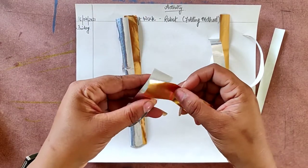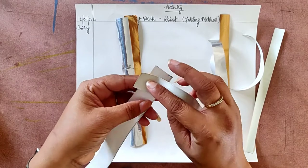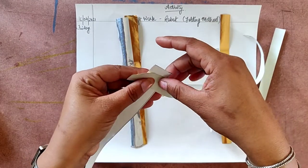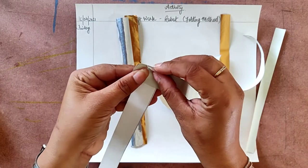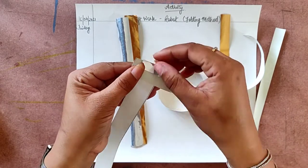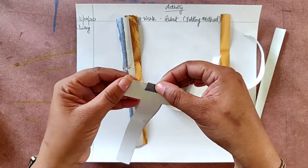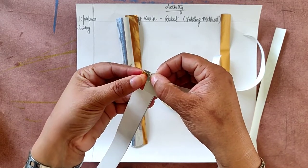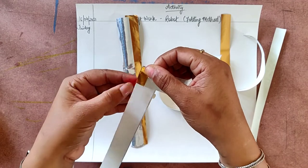Take one sheet like this, another sheet like this. This way. And fold this inside. Same way, fold this part inside.